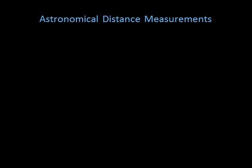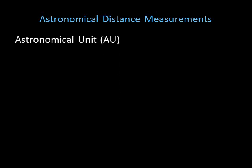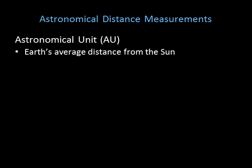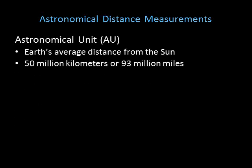There are a variety of units used for measuring distance, but two are often used in astronomy. The first is the astronomical unit, or AU — Earth's average distance from the sun, about 150 million kilometers or 93 million miles. The AU is useful for smaller measurements.